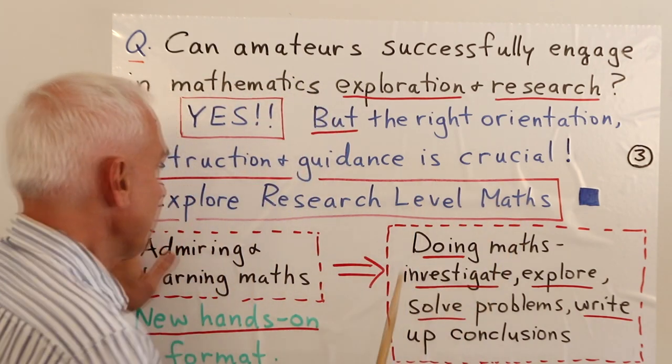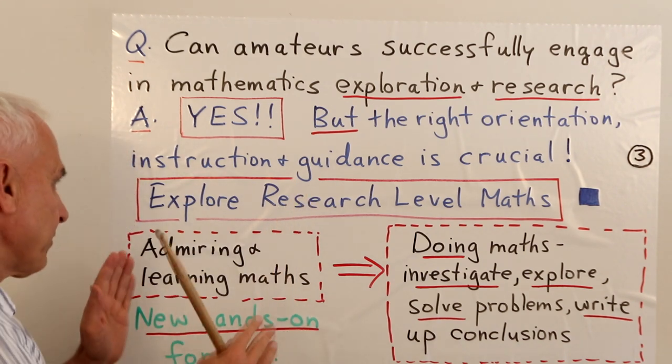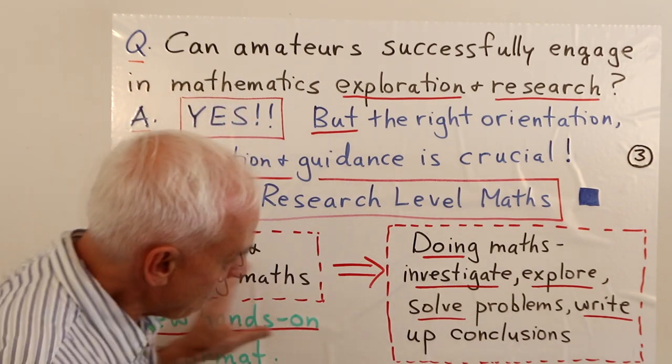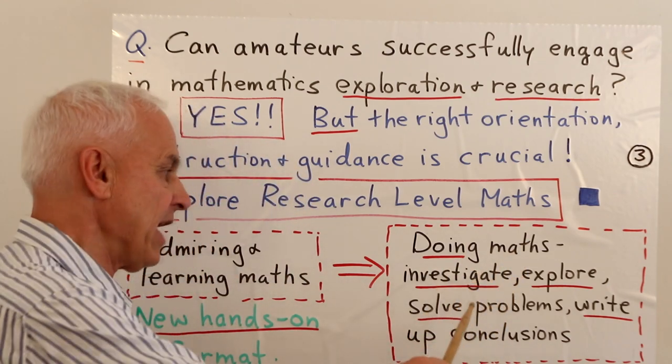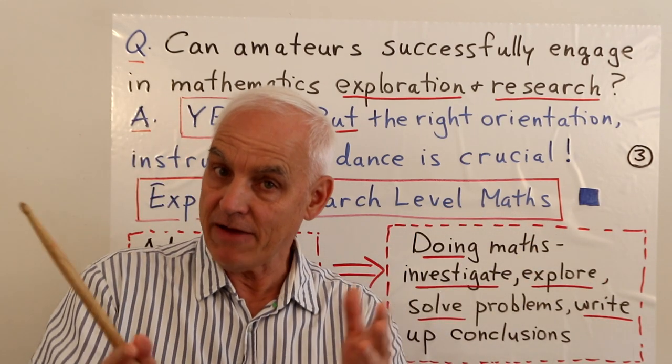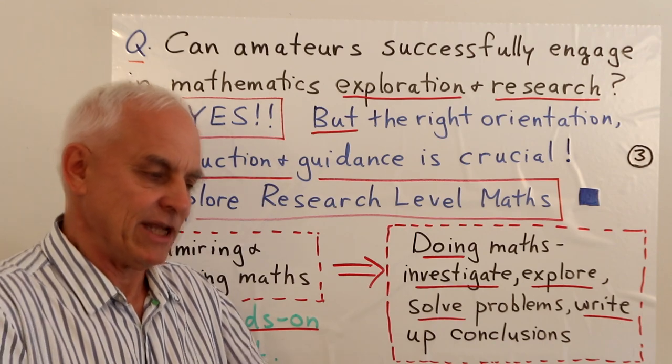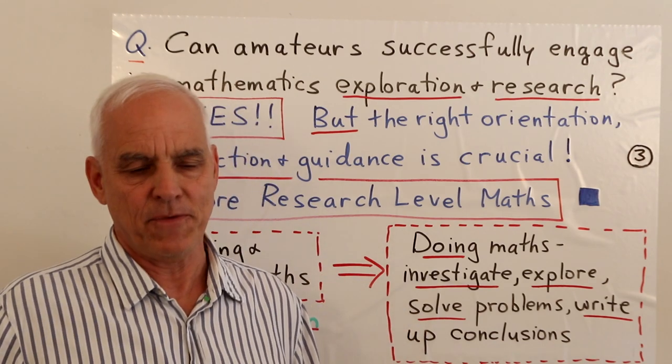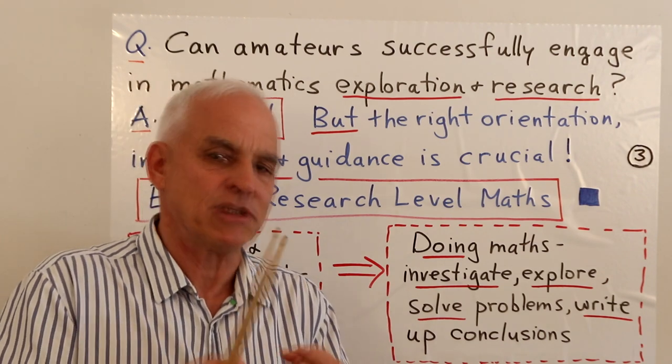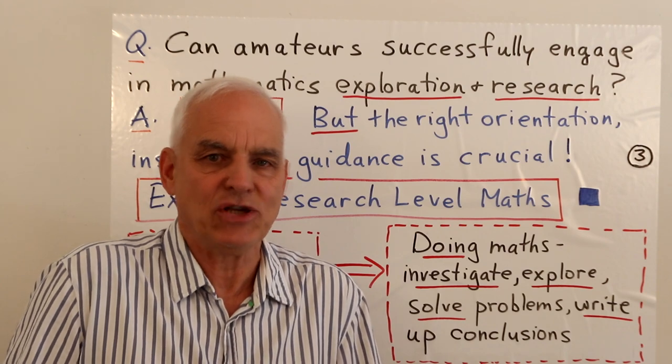In this new series explore research level maths, I'm going to try to move from our current passive admiring and learning maths frame of mind to a more active doing maths: investigating, exploring, solving problems, writing up conclusions, interacting with other people, maybe having collaborations. This is so important, to be able to roll up your sleeves and actually get to work doing something yourself. That's the place where you really learn things deeply and there's the potential for really satisfying activity that's so interesting and fun.